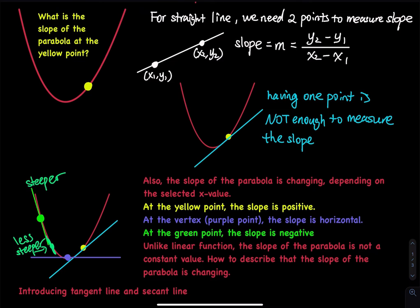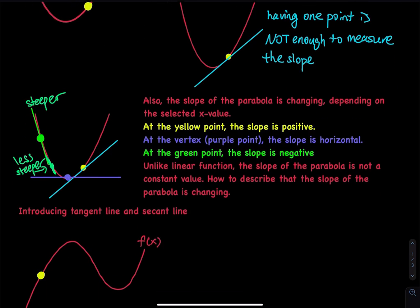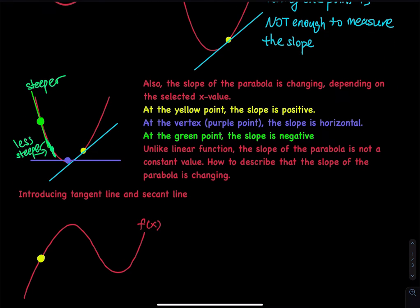So let me bring you to that point. I have to introduce tangent line and secant line. So let me give you another curve, f of x. It's not a straight line — that is very clear. I pick a yellow point, and my question is: I would like to find the slope of the curve at the yellow point. We have a red curve representing f of x, and a yellow point on the curve. I want to find the slope of the curve at the yellow point — not anywhere else, just at the yellow point.